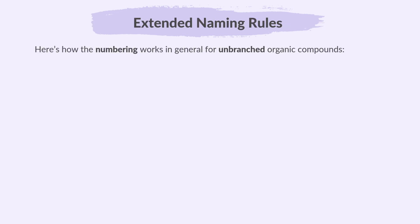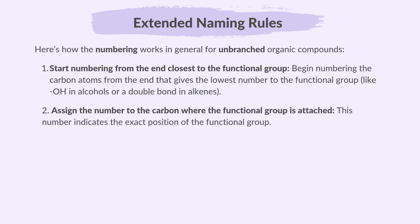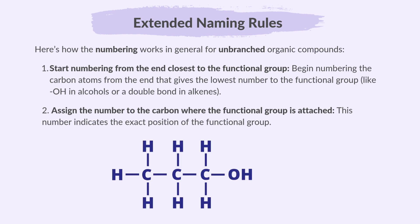Here's how the numbering works in general for unbranched organic compounds: start numbering from the end closest to the functional group, and assign the number to the carbon where the functional group is attached. This number indicates the exact position of the functional group. For example, in this compound, the end carbon closest to the functional group is identified, so we start the numbering from that carbon as one, then continue to two and three.